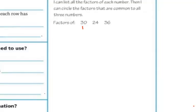So for 30: we know that 1 times 30 is 30, so those two are factors. We know that 2 times 15 is 30. We know that 3 times 10 is 30. And we know that 5 times 6 is 30. So those are my factors of 30.